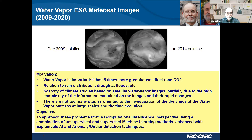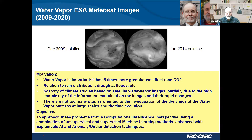Here we have two examples of the kind of images produced by the satellite. We were using a collection from 2009 to early 2023. Here we have examples from the December 2009 solstice and from the June 2014 solstice, just to show the variation of the dynamics of the water vapor distribution.